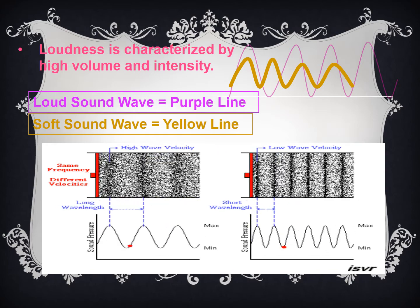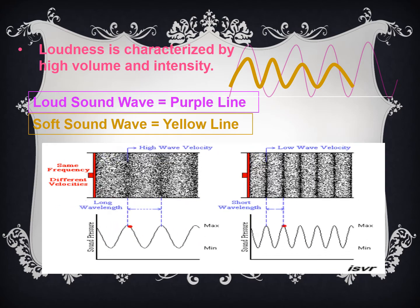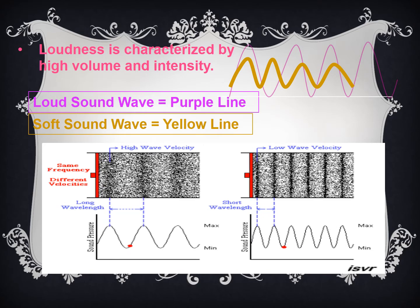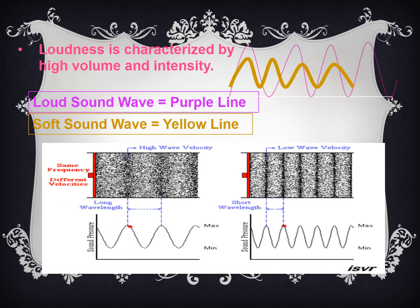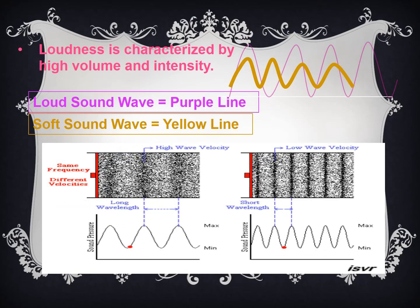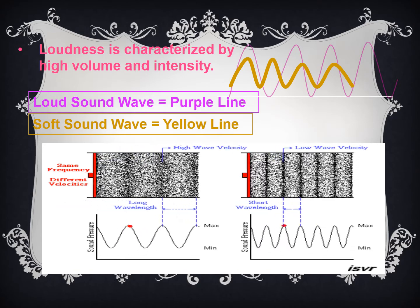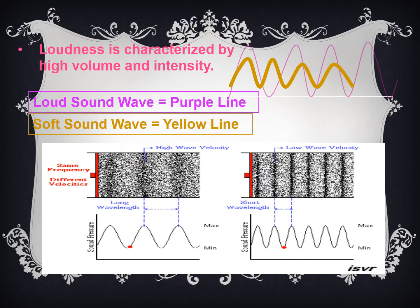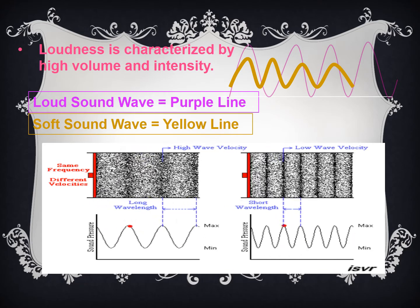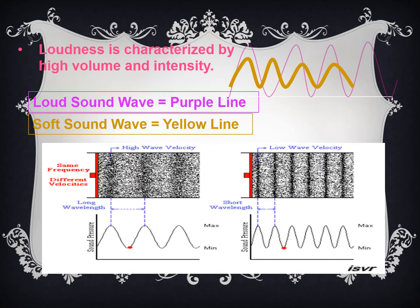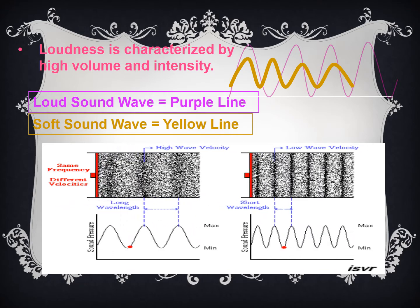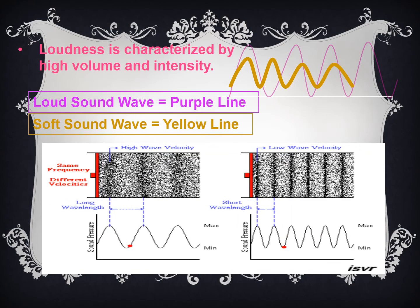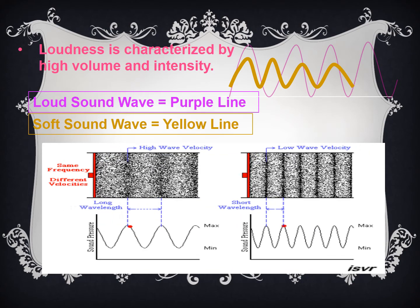Loudness and softness depend on amplitude. If there are few waves per second, the sound is soft. If there are more waves per second it is higher frequency, and if there is greater amplitude, there is greater intensity and therefore greater loudness.